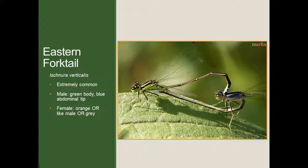Now let's talk about damselflies, starting with one of the most common species: the eastern forktail. One thing you'll notice about many damselflies is they're very hard to identify because of their small size and because many take on different color forms — one species can have females in two, three, or more different color forms. The males are generally green-bodied with a blue abdominal tip — a green thorax and a little bit of blue at the tip of the tail. However, the females can either be orange, colored like the male, or have a slightly grayish tint to the body.